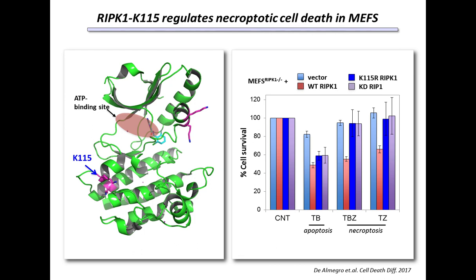Lysine 115 plays an important role in controlling cell death pathways. In cells with wild-type, K115R mutant, or kinase-dead RIP kinase 1 treated with the apoptotic stimulus TB, each group undergoes apoptotic cell death. However, with the necroptotic stimulus TBZ, cells expressing wild-type RIP kinase 1 still die, whereas cells lacking either the kinase activity of RIP kinase 1 or this single lysine 115 ubiquitination site are completely refractory to the necroptotic stimulus.